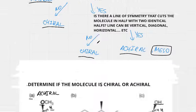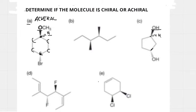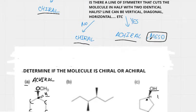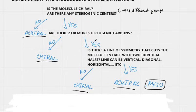Looking at the chart: stereogenic centers — yes. Are there two or more? Let's check the next carbon. It also has a hydrogen, oxygen, and going left and right — carbon, carbon, no initial difference. But continuing, one side connects to the OH group and the other does not, so there is a difference. Therefore this is also a stereogenic center. We now have two stereogenic carbons.